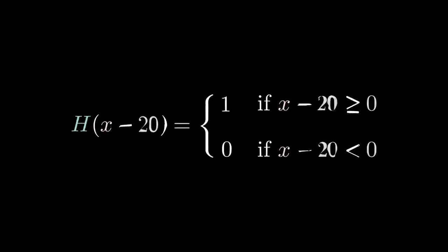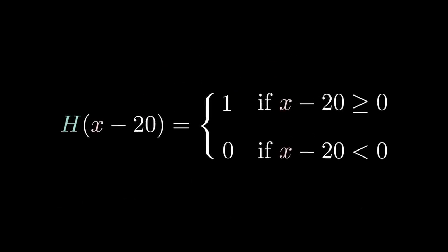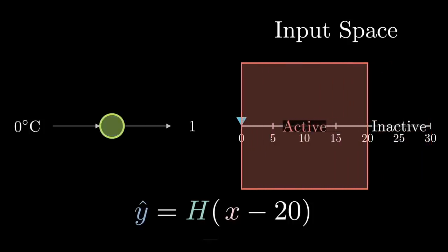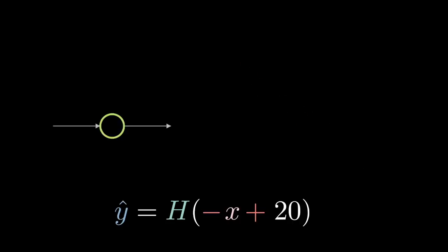Heavyside of x minus 20 is the exact same as the piecewise function 1 when x minus 20 is greater than or equal to 0, or 0 otherwise. If we wanted to flip the decisions and have any temperature above 20 be bad, we simply add a negative coefficient to the input, making it heavyside of minus x plus 20. In general, the formula for the output of a perceptron with a single input is heavyside of wx plus b.